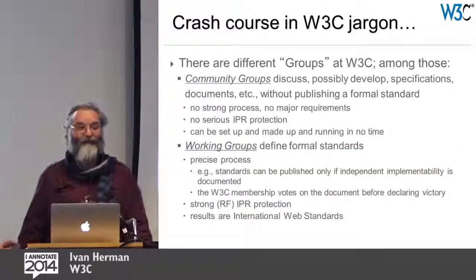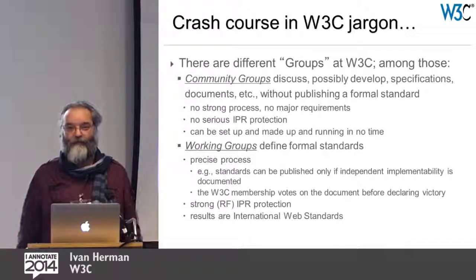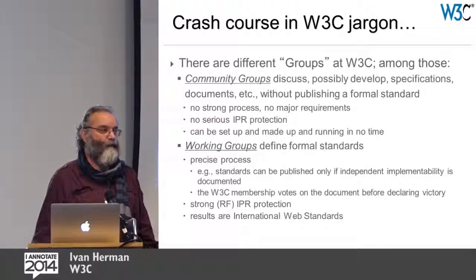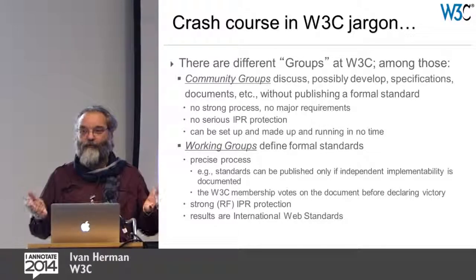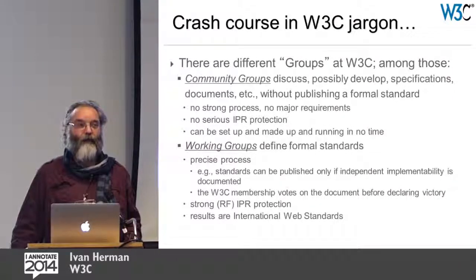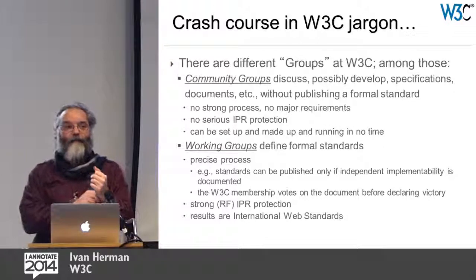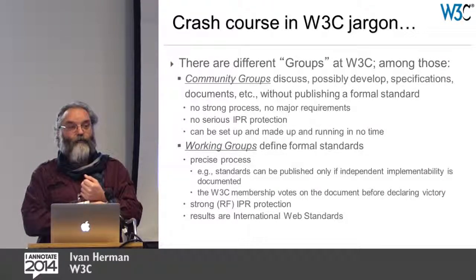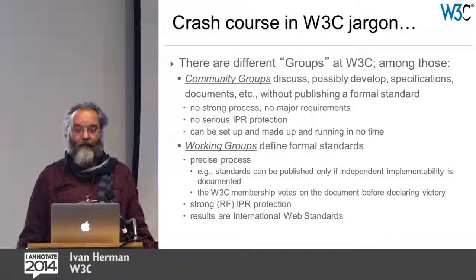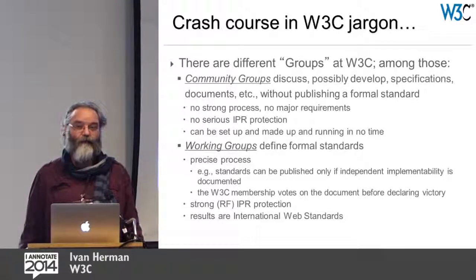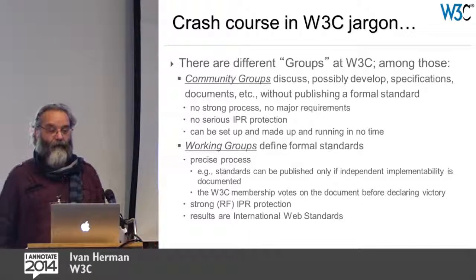A crash course on W3C jargon: there are essentially two types of groups at W3C. There are community groups that are very easy to set up — it takes about 20 minutes or less, and a few days of approval. You go there, develop specifications, documents, whatever. But the output of a community group is not a standard, there is no stringent process, and there is no significant IPR commitment. And unfortunately, we live in a world where IPR is around and we have to deal with that.